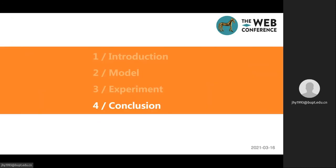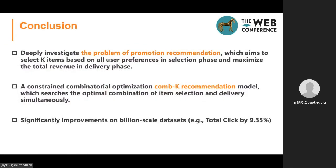The last part is the conclusion. In this paper, we deeply investigate the problem of promotion recommendation, which aims to select k items based on user preference in the selection phase and maximize the total revenue in the delivery phase. We design a constrained combinatorial optimization model that searches the optimal combination of item selection and delivery. Experimental results on real-world datasets demonstrate the effectiveness of our proposed model.